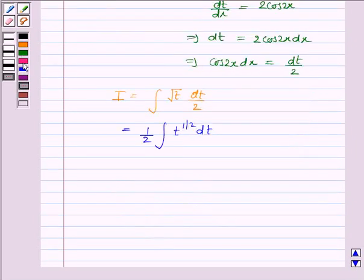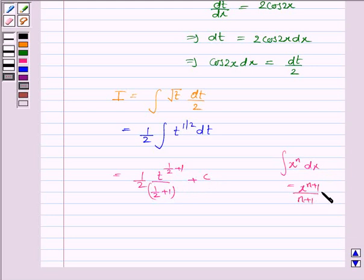And its integral is equal to 1 by 2 t to the power 1 by 2 plus 1 upon 1 by 2 plus 1 plus c. As we know that the integral of x to the power n is x to the power n plus 1 upon n plus 1 plus c. So here n is 1 by 2.